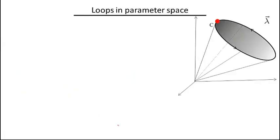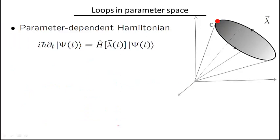Let me formulate the problem more precisely. Imagine that we have a Hamiltonian that depends on a parameter lambda — this could be anything, for example a magnetic field, or parameters of a harmonic oscillator such as its frequency. So we have some set of parameters lambda, and we combine those parameters into a vector. In principle there could be more than one parameter, and we construct a vector in parameter space, which doesn't have to be three-dimensional, but for simplicity let me imagine a three-dimensional parameter space: lambda_1, lambda_2, lambda_3.